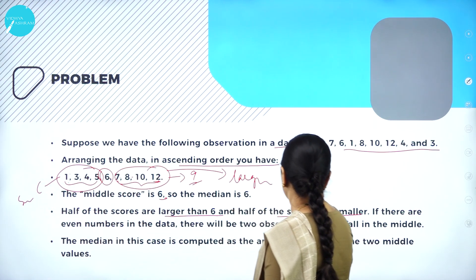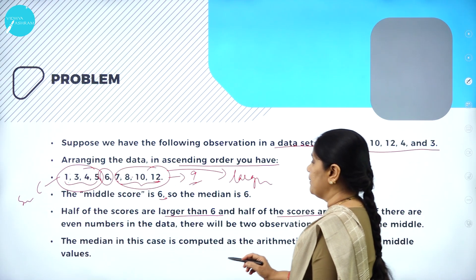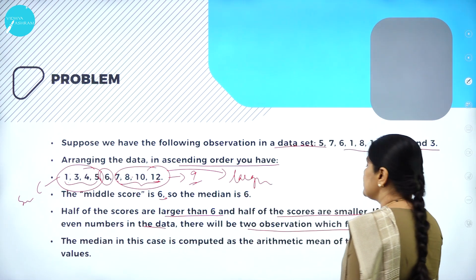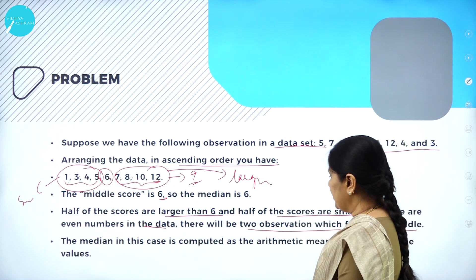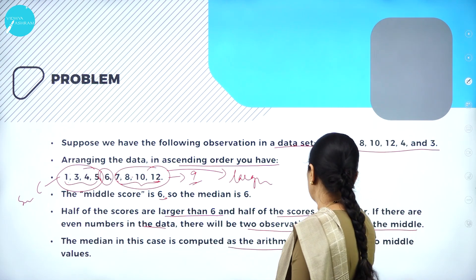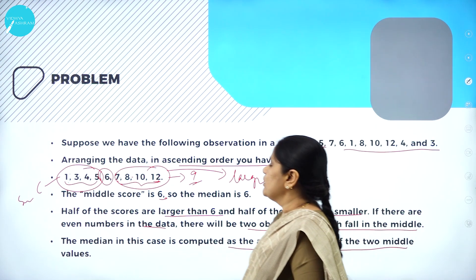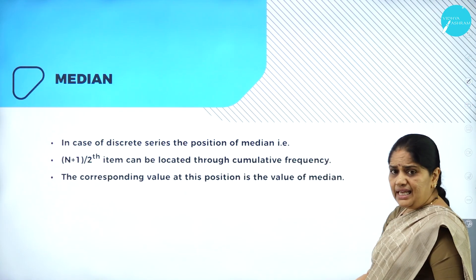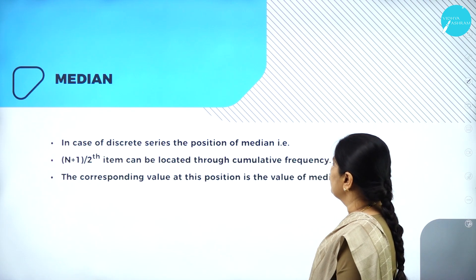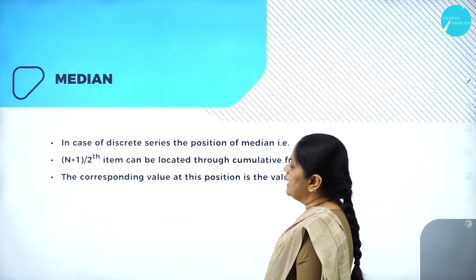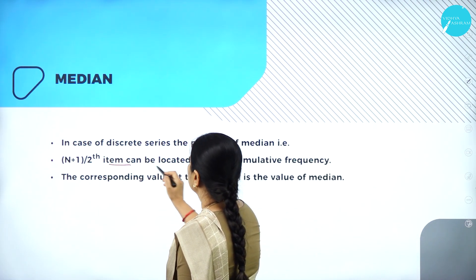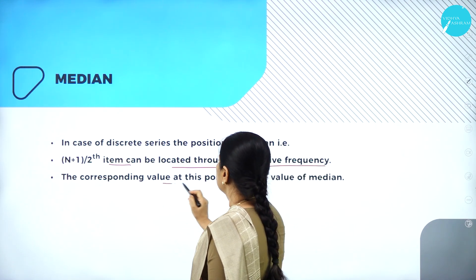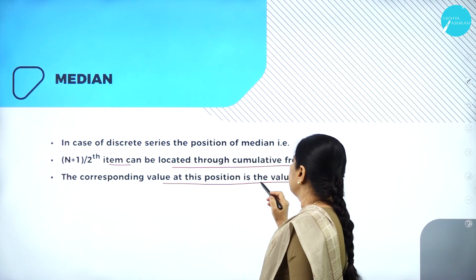If there are even numbers in the data, there will be 2 observations which fall in the middle. The median in this case is computed as the arithmetic mean of the 2 middle values. In case of a discrete series, the position of the median — that is the (n+1)/2 item — can be located through cumulative frequency, and the corresponding value at this position is the value of the median.